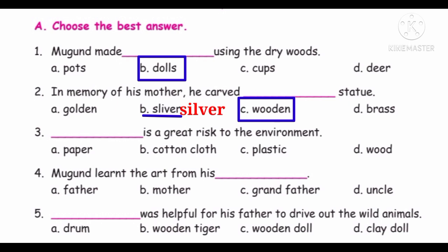Third question: Dash is a great risk to the environment. Options: Paper, Cotton cloth, Plastic, Wood. Plastic is a great risk to the environment — the answer is plastic. Plastic is a great risk to the environment.